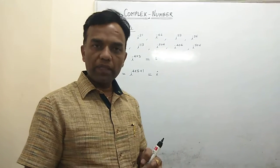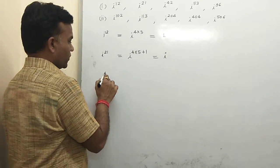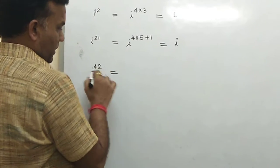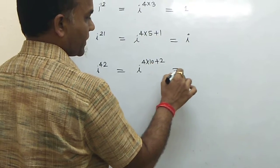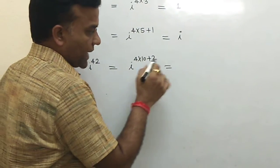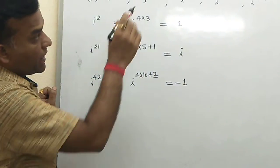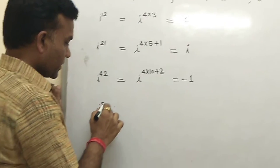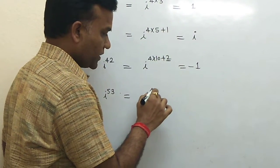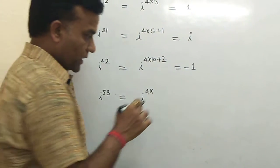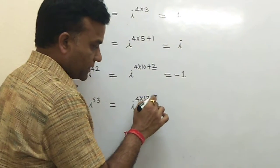For i^42: 42 = 4×10 + 2, remainder is 2, so answer is −1. For i^53: 53 = 4×13 + 1, remainder is 1, so answer is i. For i^96: 96 = 4×24, remainder is 0, so answer is 1.